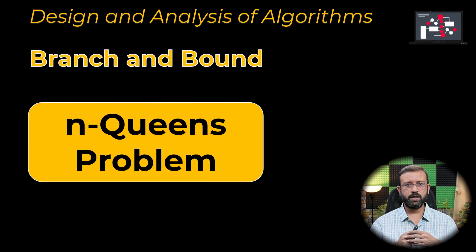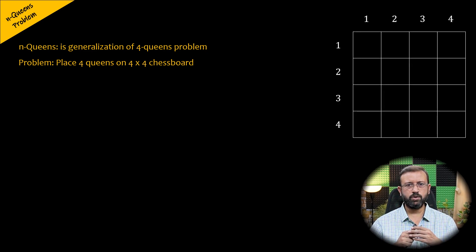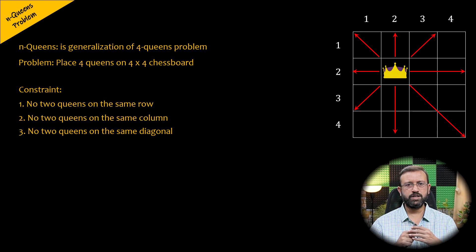In this video, we will look at the N queens problem, which is solved using the branch and bound approach. The N queens problem is a generalization of the 4 queens problem, where we have 4 queens to be placed on a 4 by 4 chessboard. The chessboard is divided into rows and columns, numbered from 1 to 4. Each queen has to be placed such that no 2 queens attack — that is, no 2 queens can be on the same row, column, or diagonal. This is the constraint for the N queens problem.